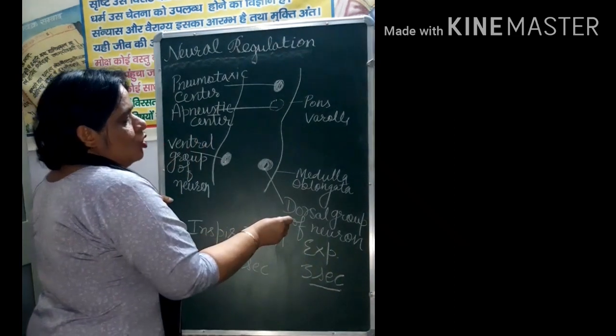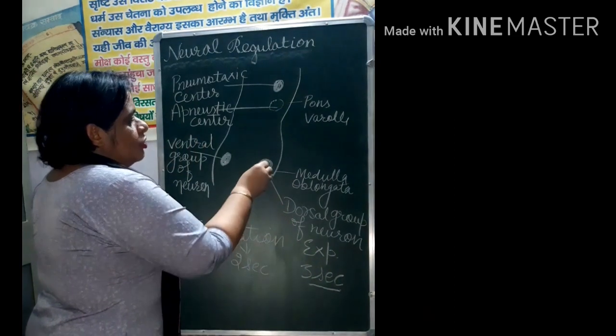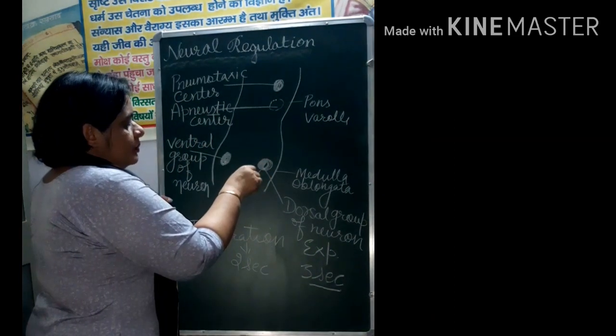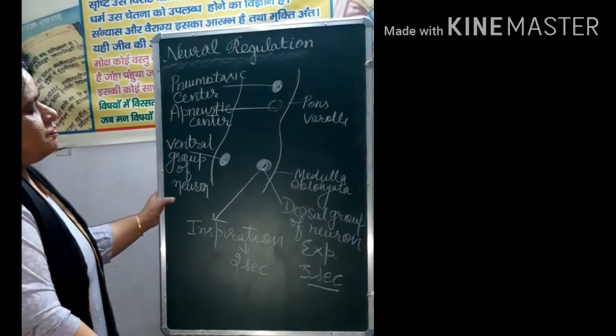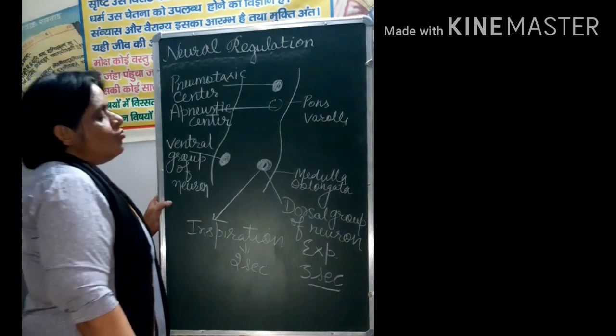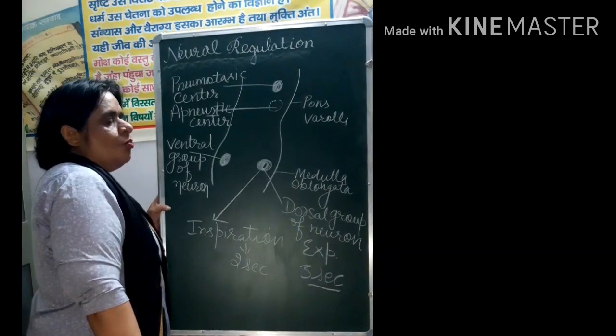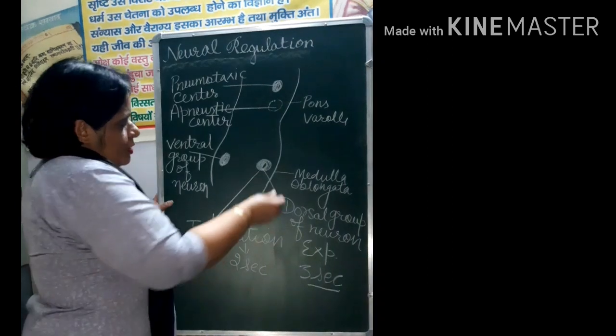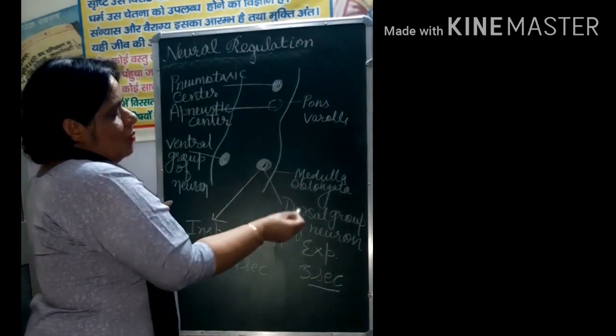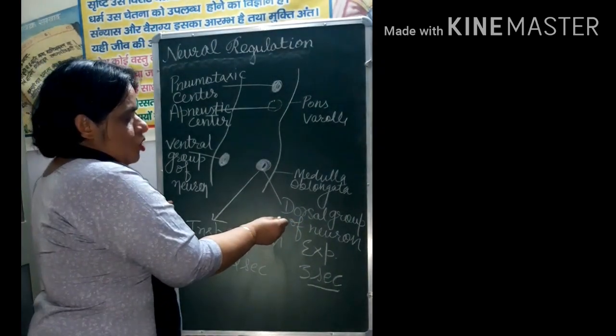If we talk about the Dorsal Group of Neuron, Dorsal Group of Neuron they control the Inspiration and Ventral Group of Neuron they control both Inspiration and Expiration.